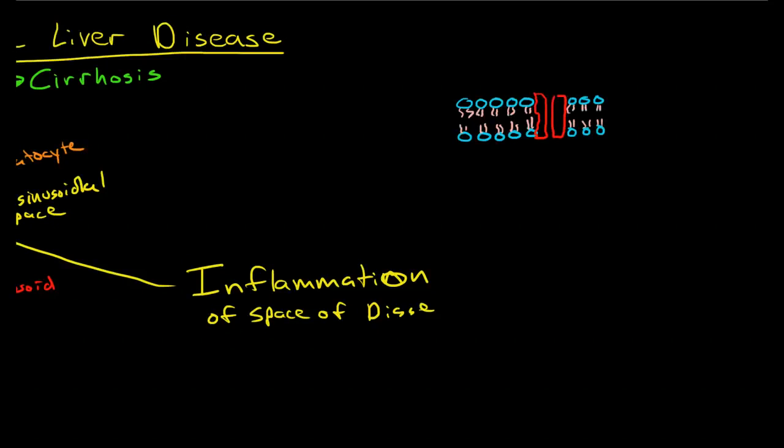So the first way that alcohol leads to inflammation of the space of Disse is that alcohol, now I'm using the abbreviation ETOH, which is an abbreviation for ethyl alcohol. Alcohol is actually a solvent to lipids, and it is a solvent, in particular, to the phospholipid membrane.